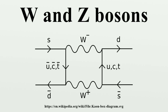Consider, for example, the beta decay of cobalt-60: ⁶⁰₂₇Co → ⁶⁰₂₈Ni + e⁺ + νₑ. This reaction does not involve the whole cobalt-60 nucleus, but affects only one of its 33 neutrons. The neutron is converted into a proton while also emitting an electron and an electron anti-neutrino: n⁰ → p⁺ + e⁻ + ν̄ₑ. The neutron is not an elementary particle but a composite of an up quark and two down quarks. It is in fact one of the down quarks that interacts in beta decay, turning into an up quark to form a proton.